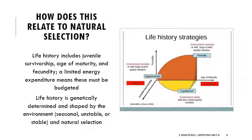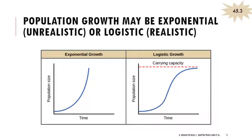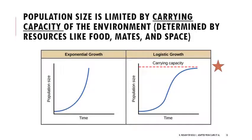When thinking about a population growing and adding individuals, it could be exponential — generally unrealistic and short-lived — or logistic, which is realistic and reflects a carrying capacity. Carrying capacity is the upper limit the environment can sustain, determined by resources like food availability, mate availability, and space. If you look at the logistic growth curve, there is an exponential portion that eventually slows down and plateaus. Realistically it doesn't perfectly plateau — what happens is the population overshoots the carrying capacity, a bunch of individuals die, and then it rebounds, oscillating around that carrying capacity.